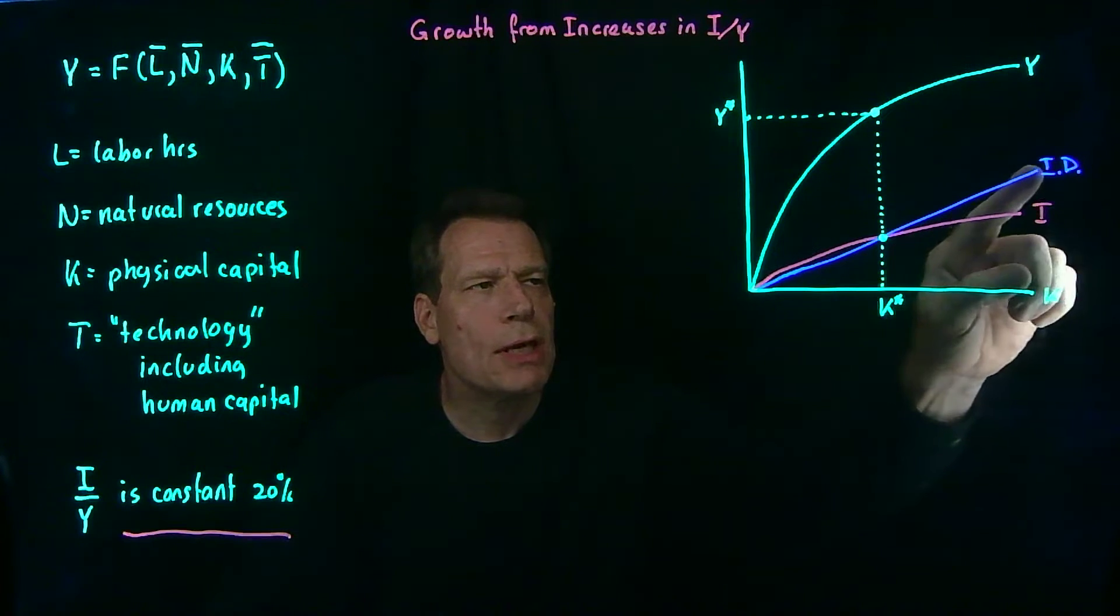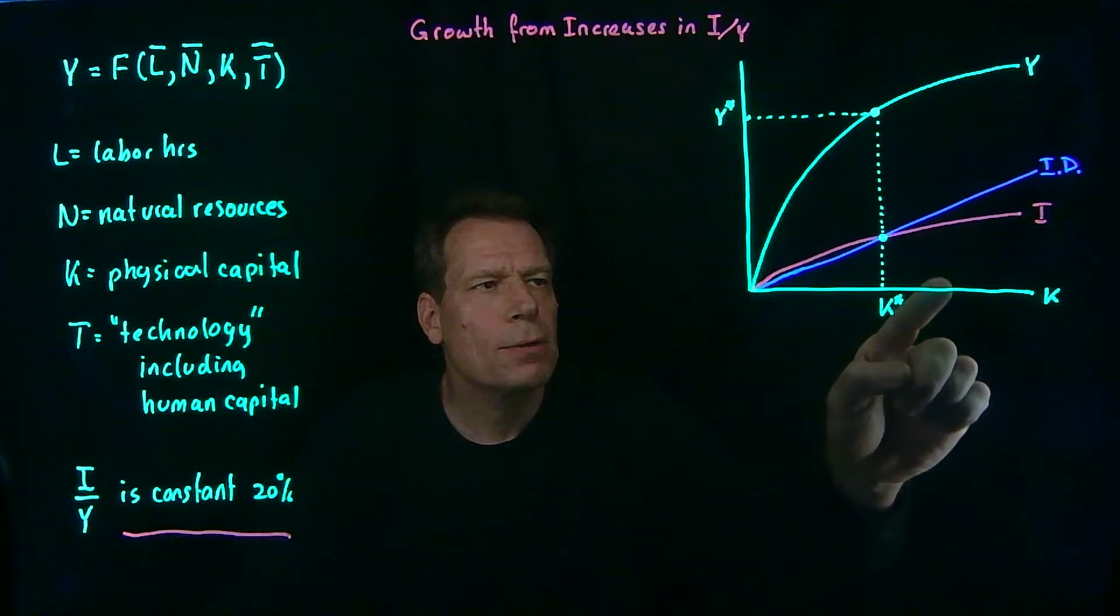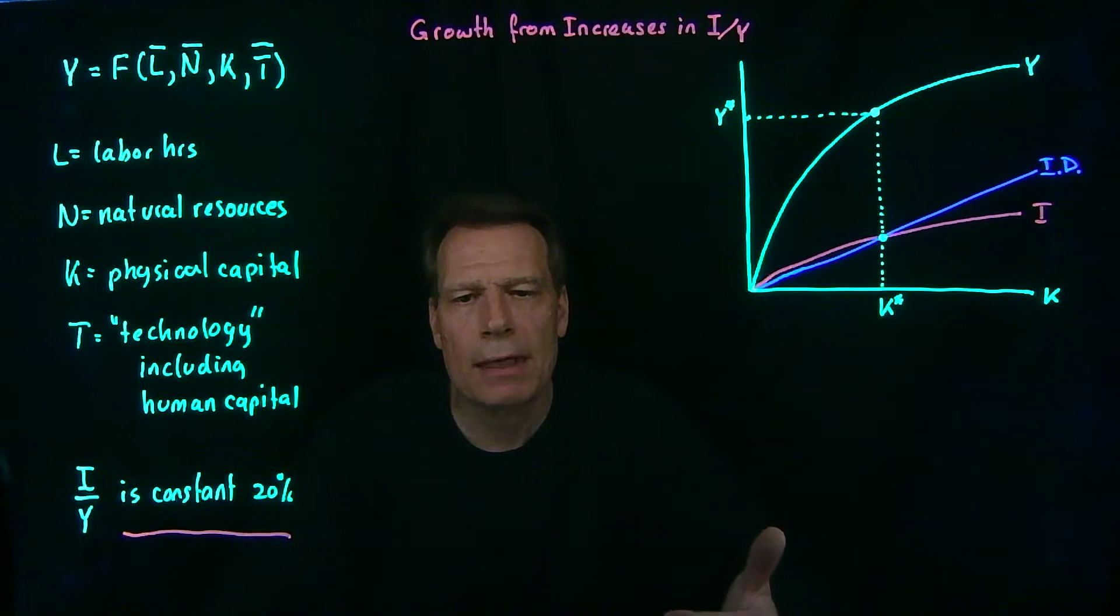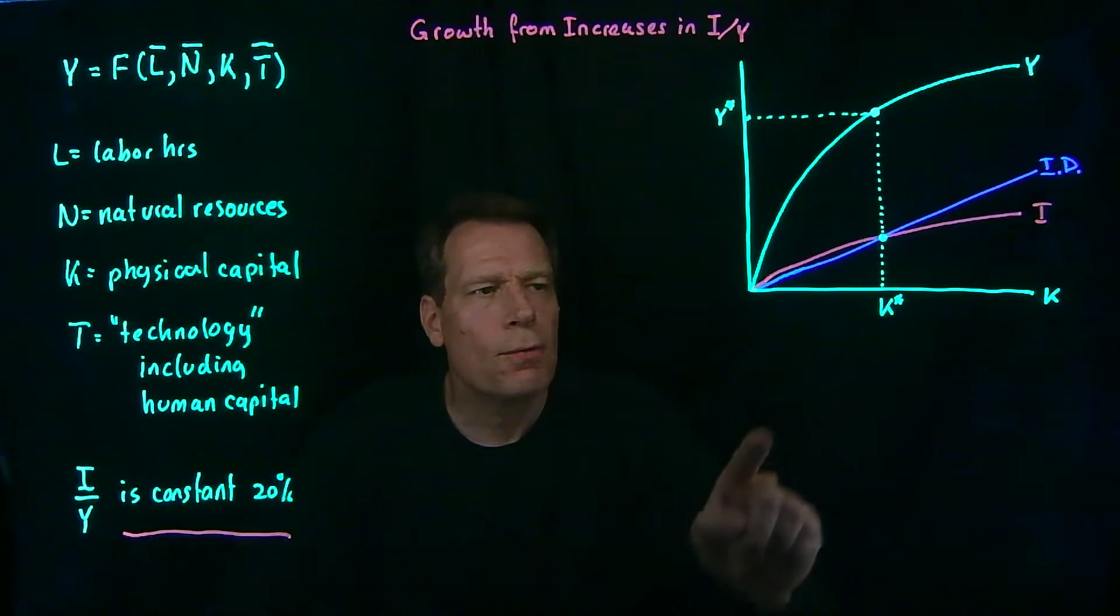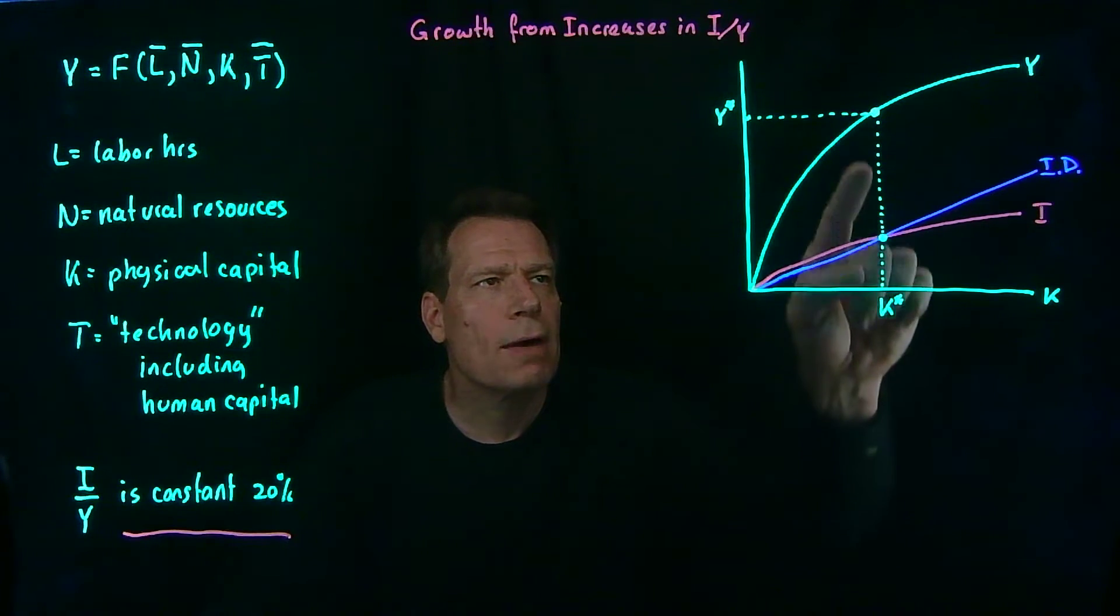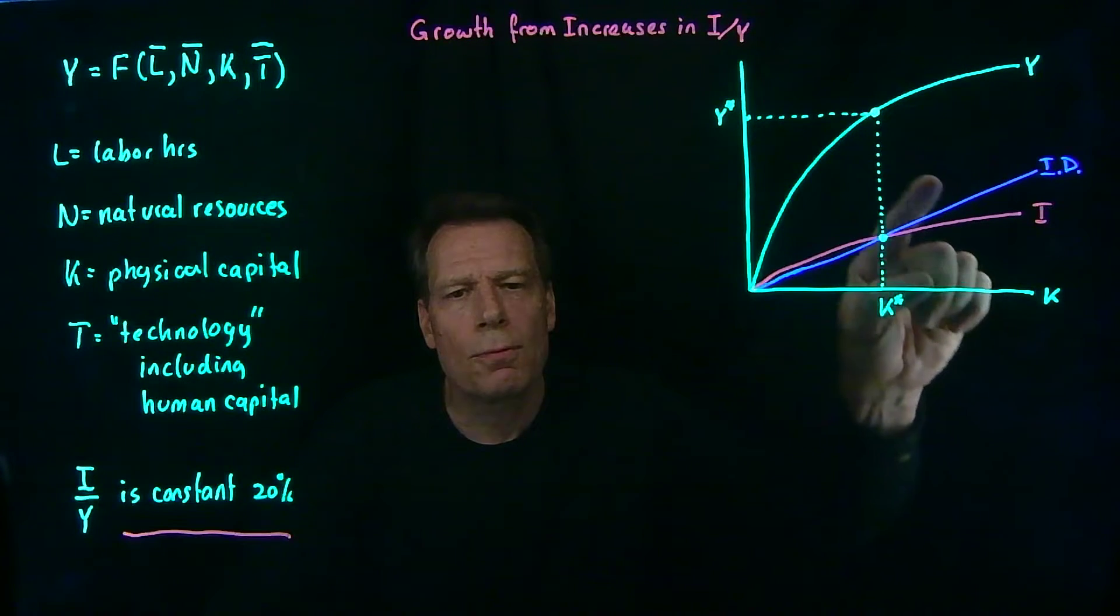None of the other lines or curves would change. The investment depreciation line wouldn't change. It would still cost the same amount of investment to just keep the capital stock constant as it did before. Nor would the GDP line change for any level of capital. We'd still have the same level of GDP. But the investment curve would rotate up.